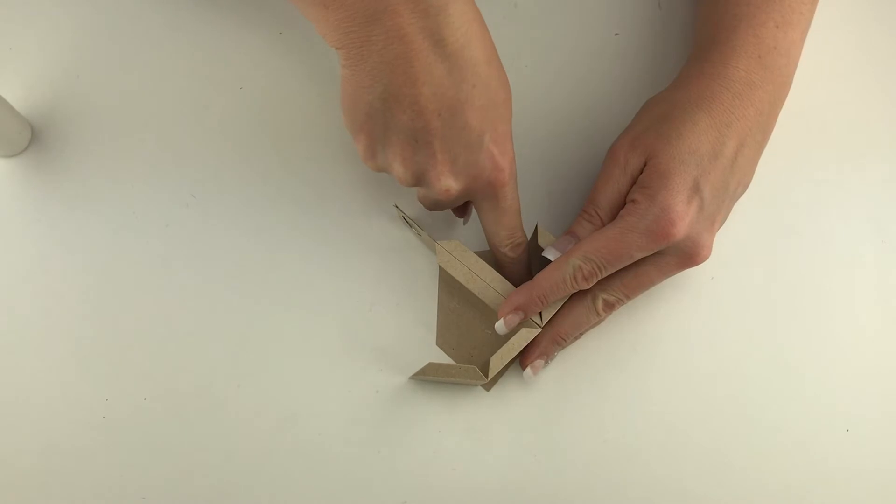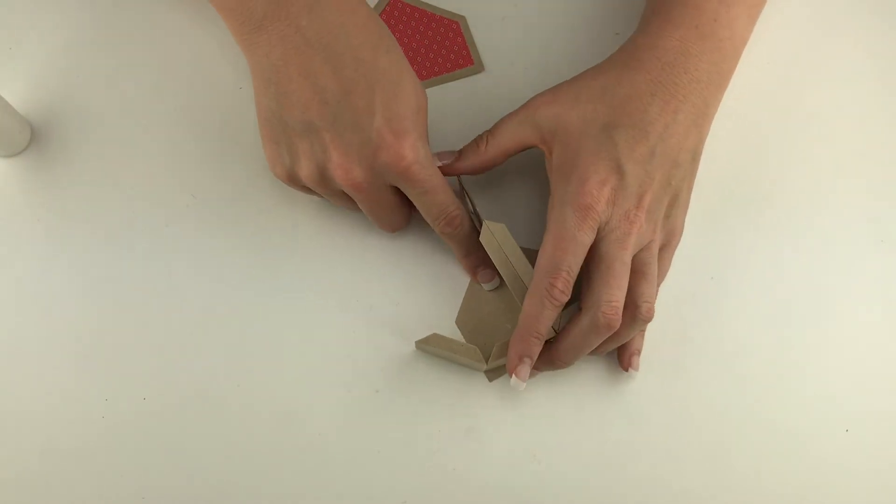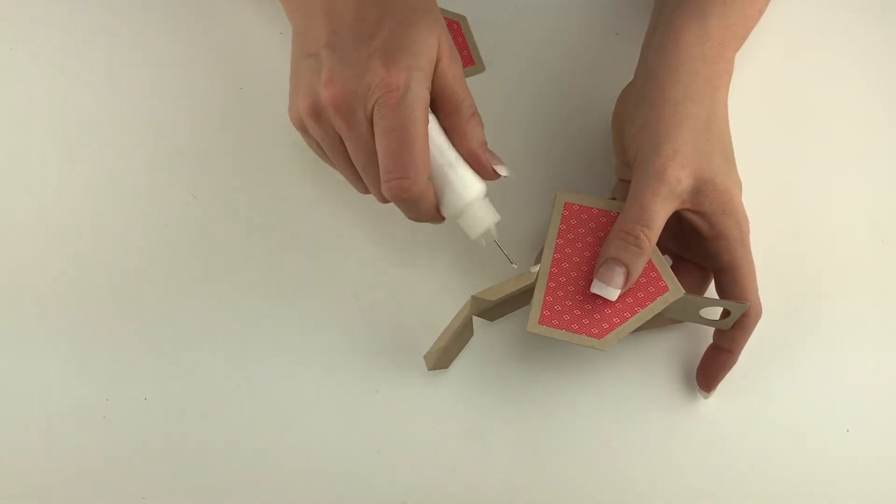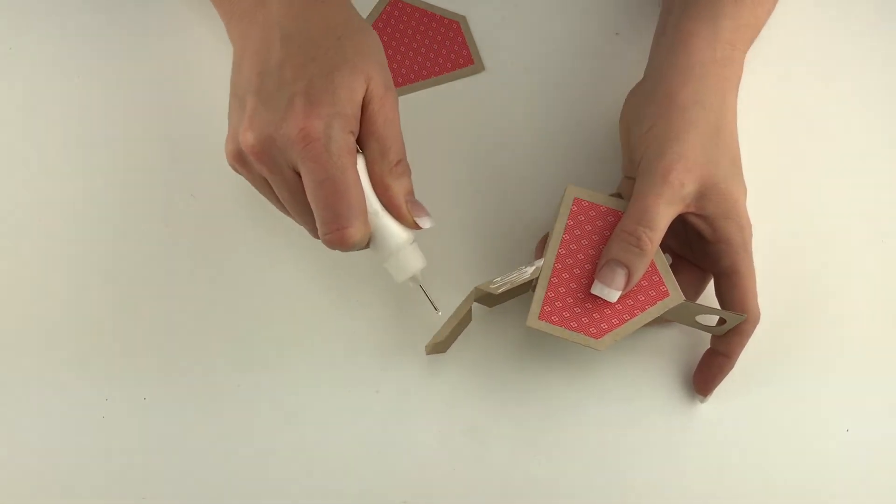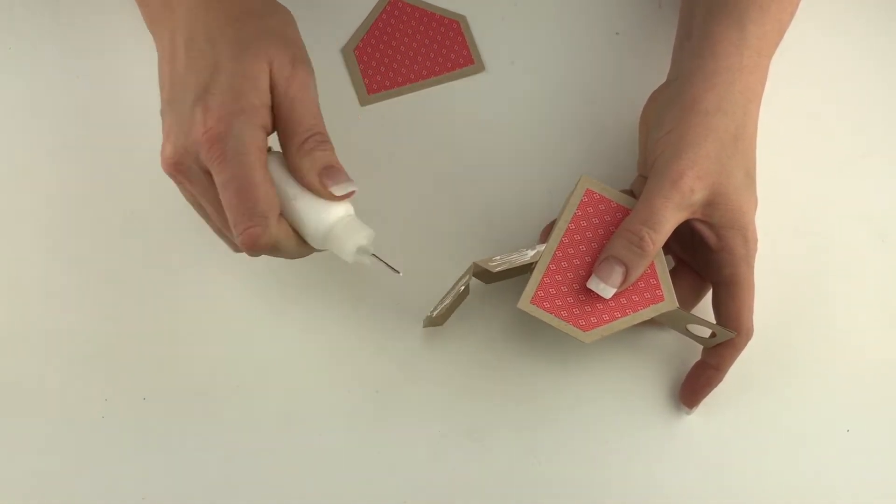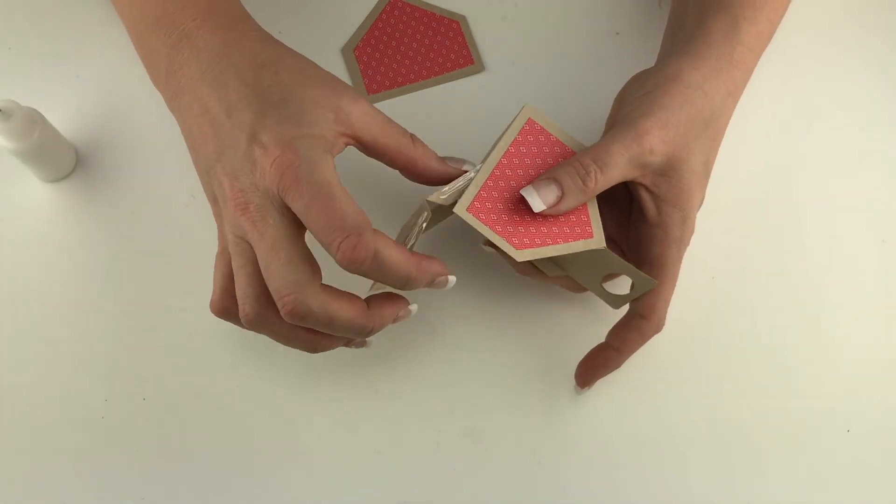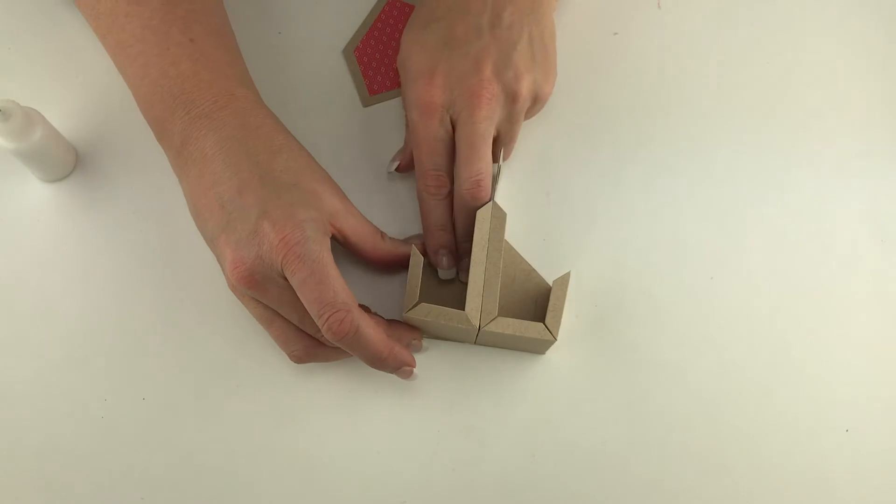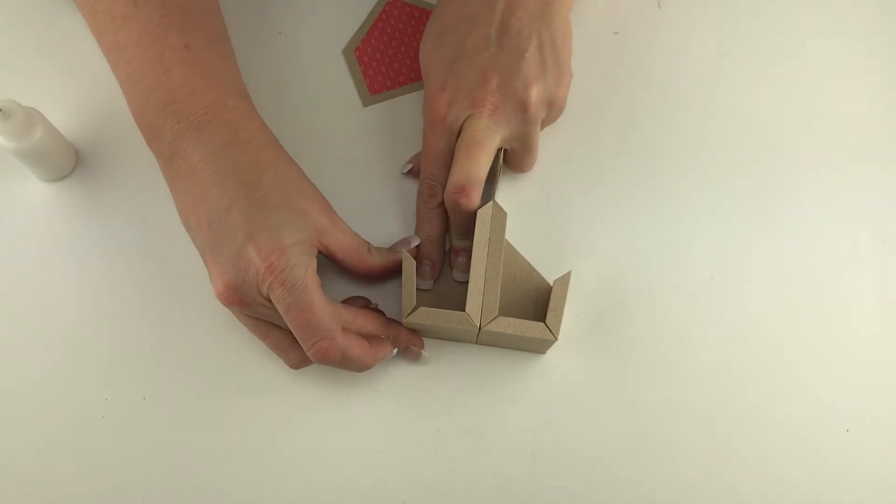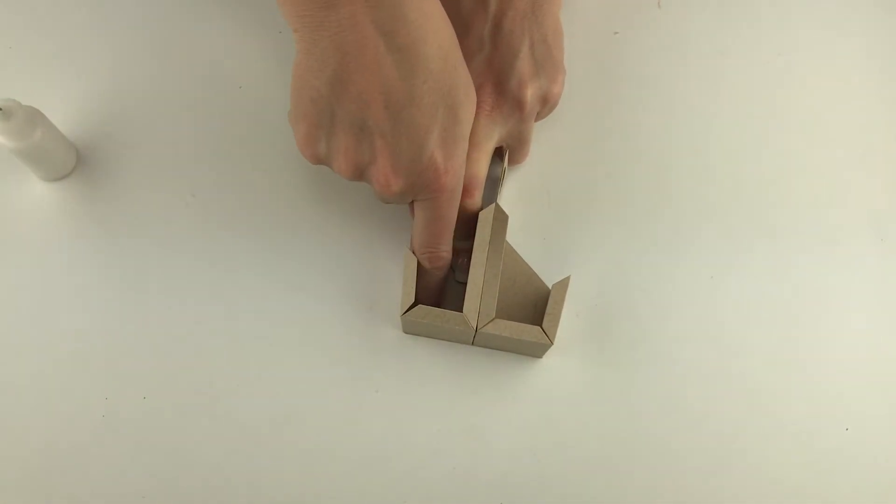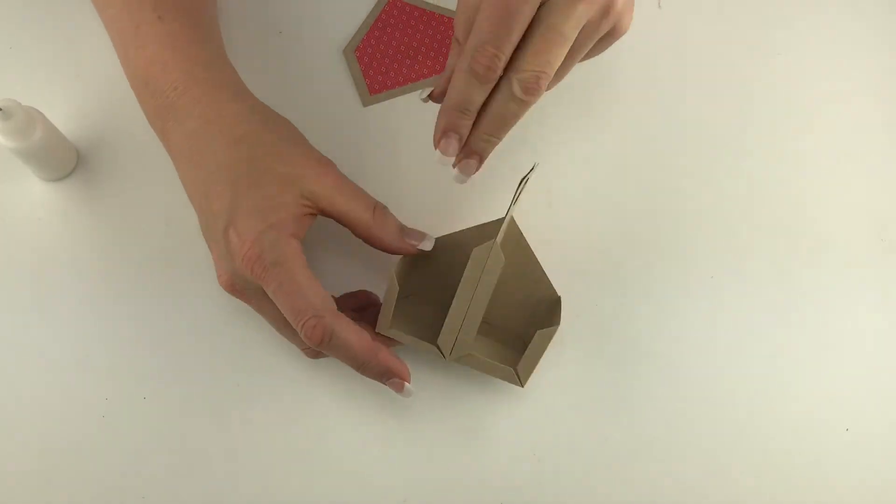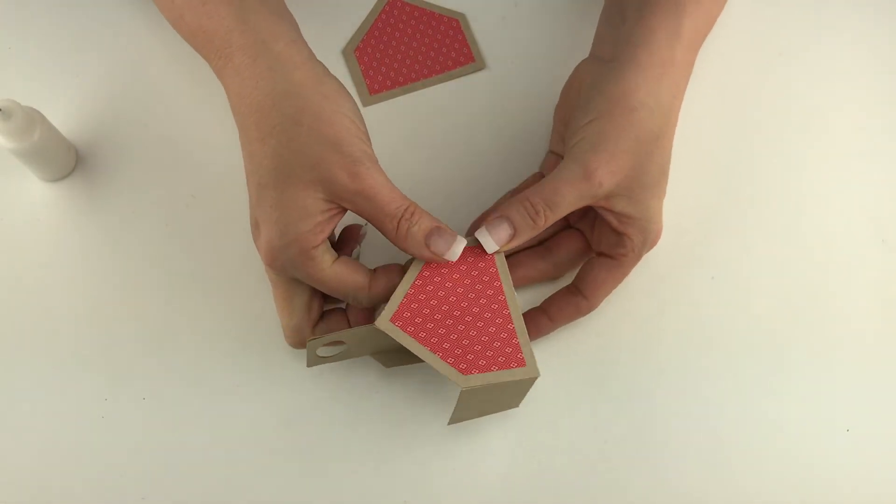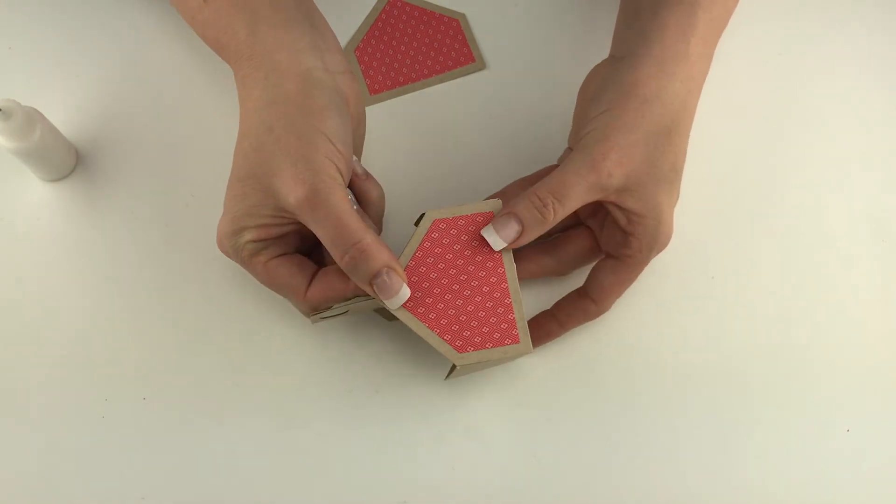Then you're going to do the same thing for these other two tabs here. So put a little adhesive on those, tuck them in, and line them up with the side of your project. So that pretty much is one side of our tote completed.